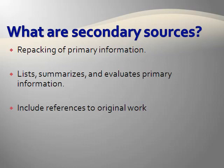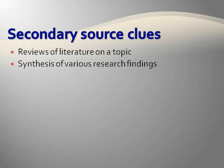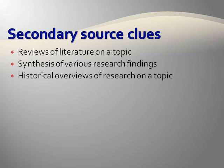They may also include a bibliography that can effectively lead you back to the primary research reported in the article. Here are some clues that a report or article is a secondary source. It contains reviews of literature on a topic. No specific hypothesis is being tested, but rather it is a synthesis of various research findings. A secondary report will summarize findings from various studies and research groups. Secondary sources also include historical overviews of research on a topic. Remember, secondary sources are far removed from the original research.